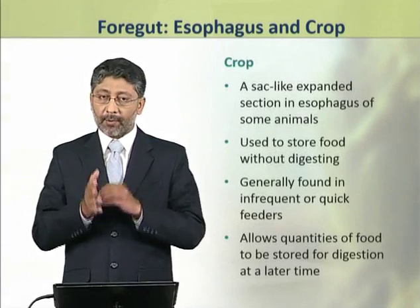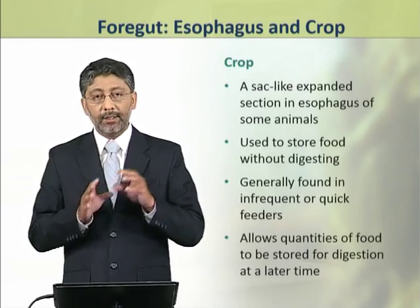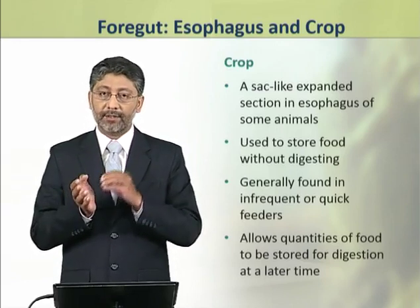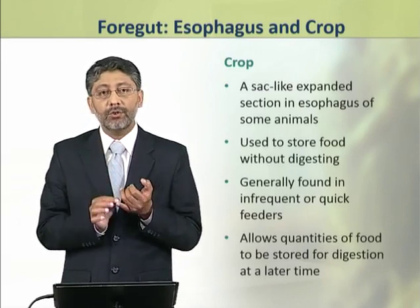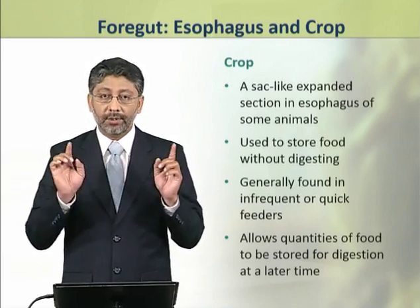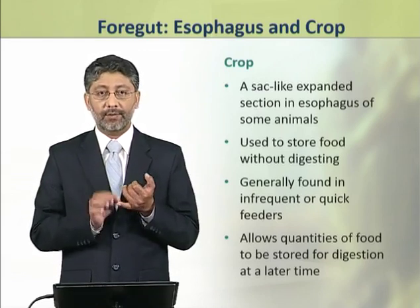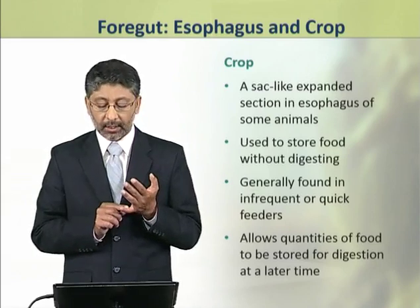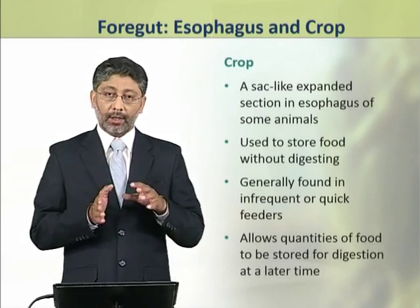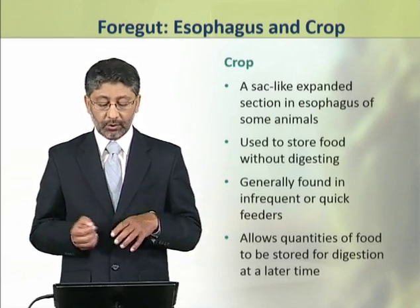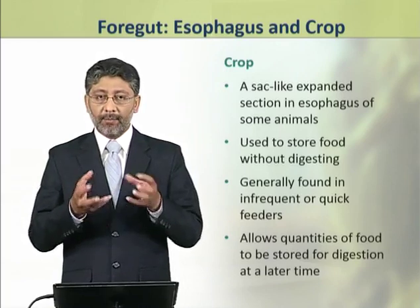The crop is a part of the foregut used in some animals. It is used to store food without digesting it. It is generally found in animals which are either quick feeders or infrequent feeders. It allows quantities of food to be stored for digestion at a later time.